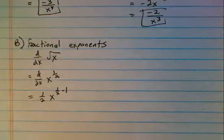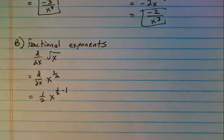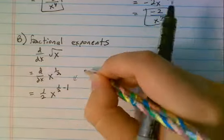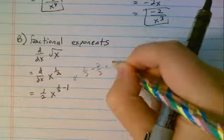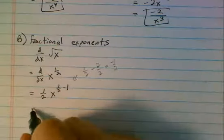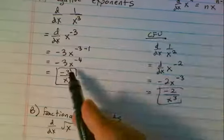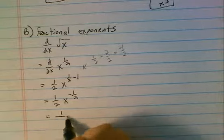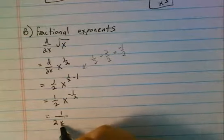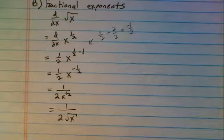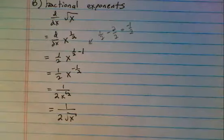Subtract 1 from the exponent. Being fluent with fractions is incredibly important here. This is 1 half minus 2 over 2, or negative 1 half. So we've got 1 half x to the negative 1 half. Same as before, take that into the denominator — 1 over 2, now this is down here. x to the 1 half is the same thing as 1 over 2 times the square root of x. You've got to be really fluent with that conversion from fractional exponents to radicals.